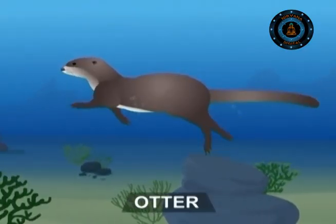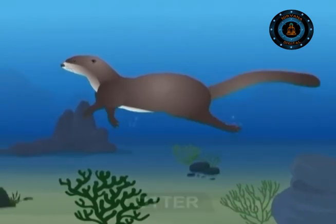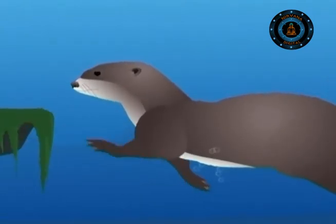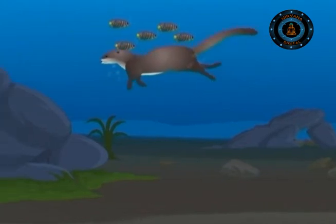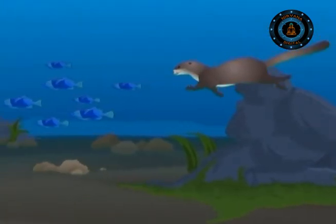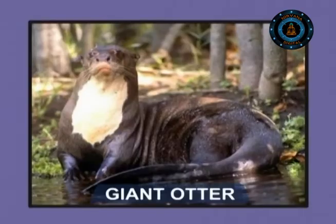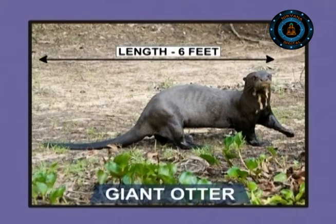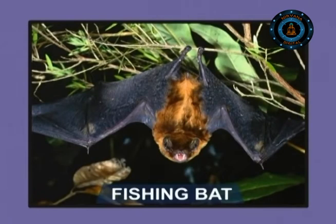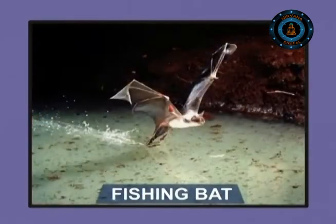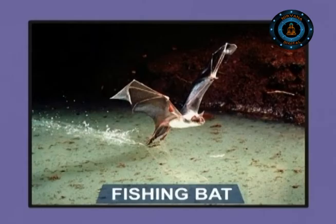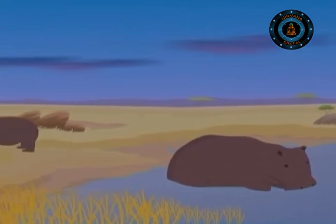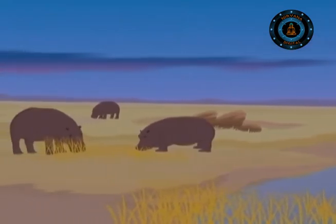The otter is another aquatic mammal that often comes onto land despite having webbed feet and closable nostrils to help it underwater. Otters are playful mammals and expert underwater hunters. The giant otter of the Amazon grows to a full length of six feet. There are also several fishing bats that grab their prey from above, and hippopotamuses of Africa that spend much of their lives in water, climbing onto land only to graze, usually at night.